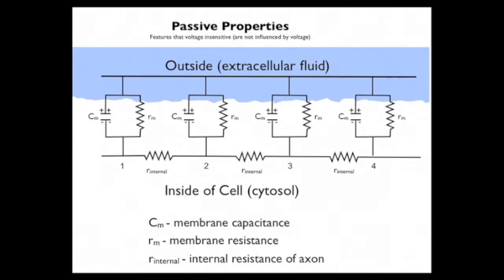This is a drawing of the electronic components that comprise the axon. The outside is indicated in blue, that's the extracellular fluid, and the inside of the axon is indicated by white.